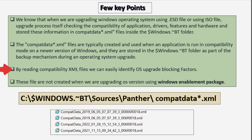By reading the compatibilitydata.xml file we can easily identify operating system upgrade blocking factors. Note that these files are not created when we are upgrading the operating system using the Windows enablement package.